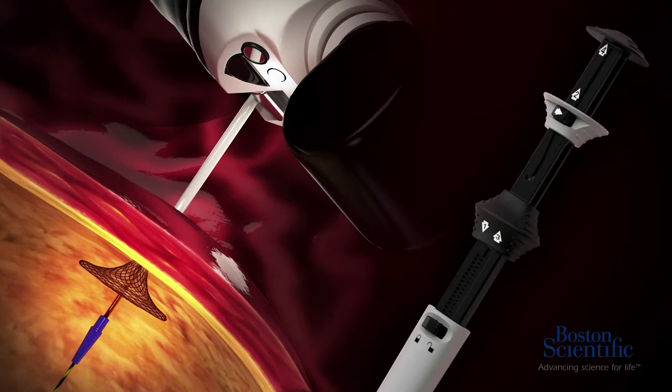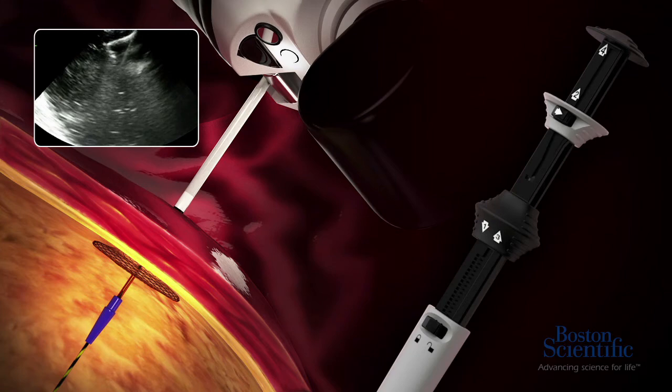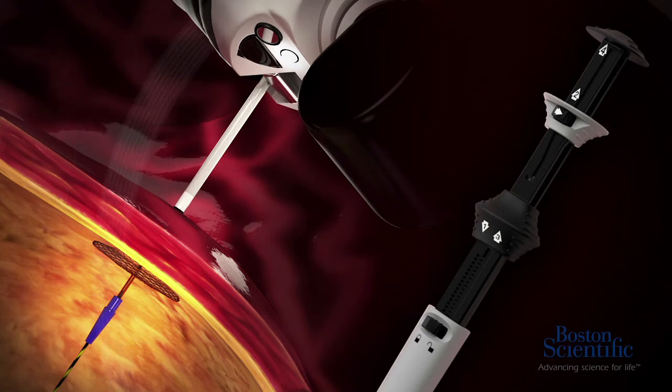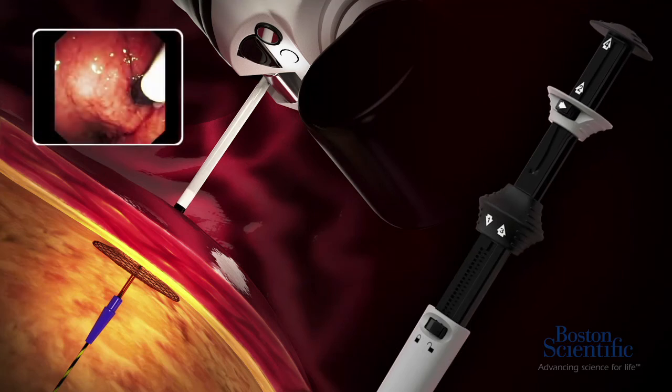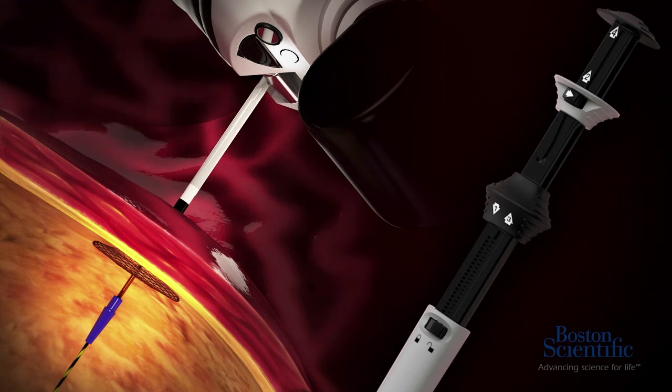Step number three. Pull the endoscope back slightly in order to directly visualize the catheter shaft in the GI tract. Unlock the catheter lock and slide the catheter control hub upwards until at least two to three millimeters of the black catheter shaft marker is visible in the GI tract. This indicates that the Axio stent is correctly positioned for the final stage of deployment. Then lock the catheter lock.